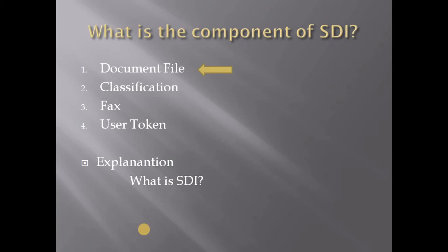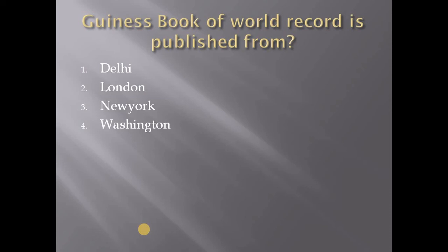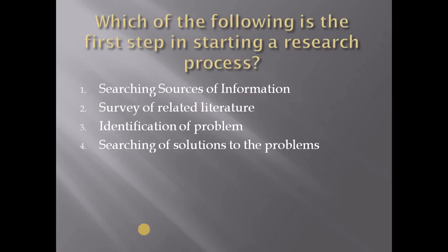The right answer is document file — the component of SDI is basically document file. The next MCQ is: the Guinness Book of World Records is published from — (1) Delhi, (2) London, (3) New York, (4) Washington. The right answer is New York; the Guinness Book of World Records is published from New York.